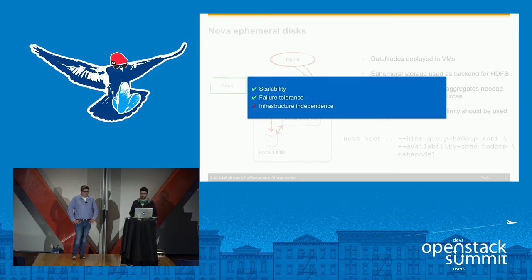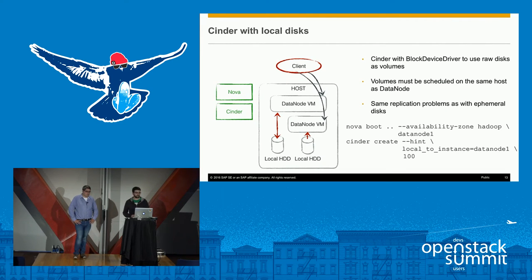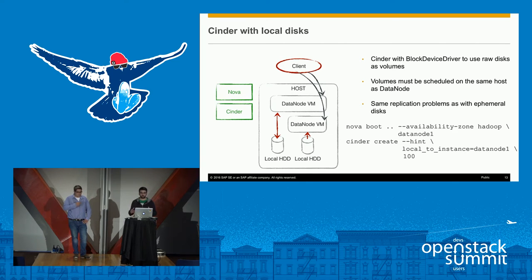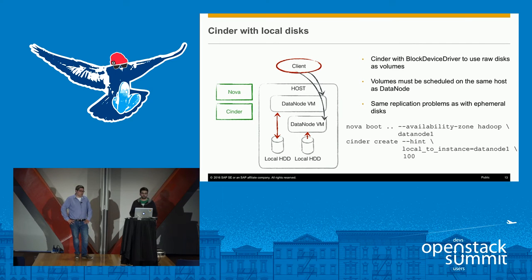Before tackling infrastructure independence, we want to show another solution that addresses the performance problem of sharing physical resources on the host. Instead of using ephemeral storage for VMs, you can use Cinder. Cinder has a so-called block device driver which allows you to use raw block devices as volumes, enabling us to pass local disks directly into the data nodes. The one limitation is that we must ensure Cinder schedules its volumes on the same host as the data node. Since we are using raw block devices, we can't just pass them over the network. Luckily, the Cinder scheduler provides a filter where you give it a Nova instance ID and Cinder will ensure the volume is created on the same host.